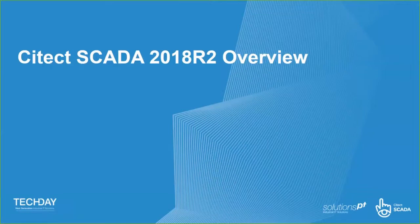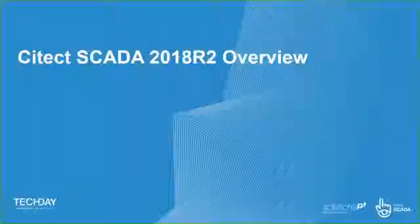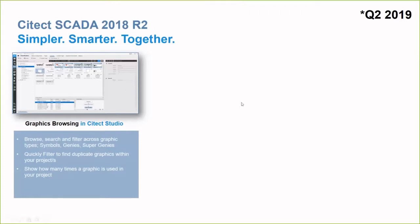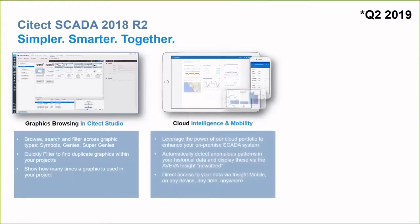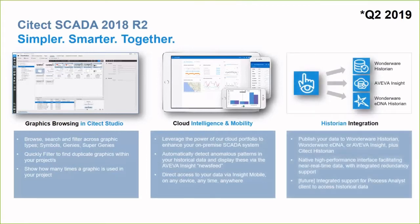Now let's look at the new features coming in the next release — CITECT SCADA 2018 R2. CITECT has decided to integrate the graphic symbol and graphic pages into CITECT Studio, allowing you to browse all your Genies graphics and even see how many times a graphic is used in the project. We're also able to leverage the cloud solution AVEVA Insight with CITECT SCADA 2018 R2, by providing historian integration natively within CITECT SCADA 2018 R2.